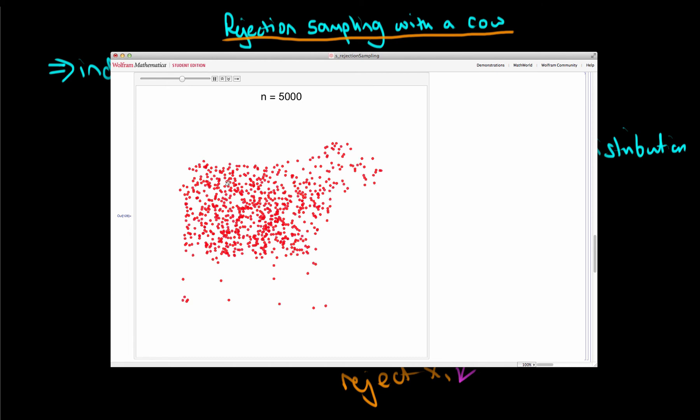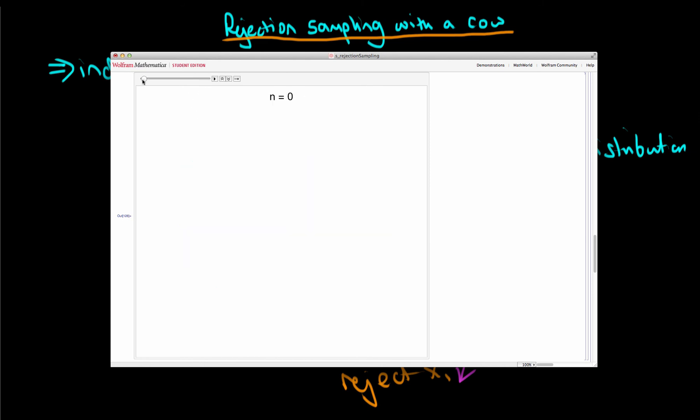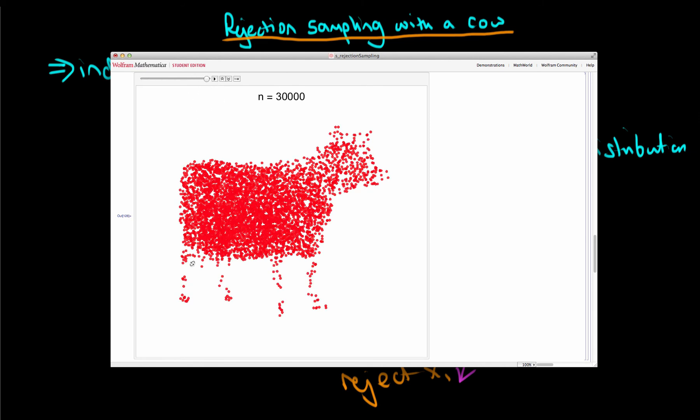And after we generate further samples we start to get really into the literal tails of this distribution. There is a tail here and also into the feet of that distribution which are the bits that are relatively narrow and hard to generate points from.